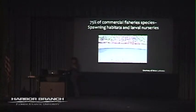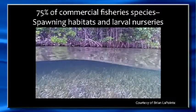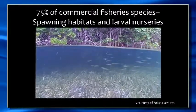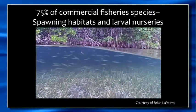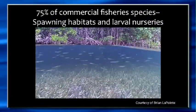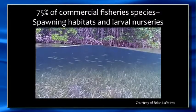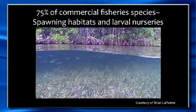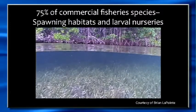Another commonality is that estuaries are home to spawning habitats and nurseries. Seagrass beds and mangroves are very productive areas — young fish swim through their nursery here. These could be snook, sea trout, redfish, flounder, or bass. These productive seagrass and mangrove areas are some of the most important for commercial and recreational fishing. They also hold shrimp, crabs, oysters, and clams.